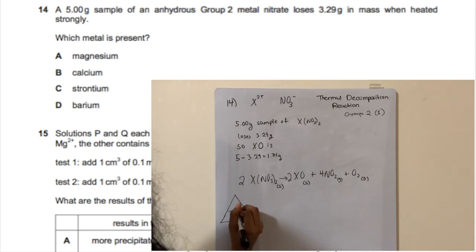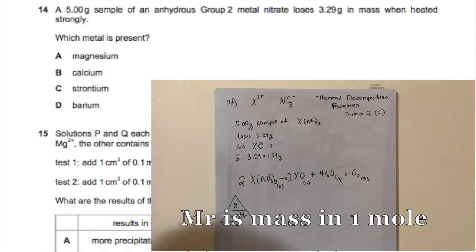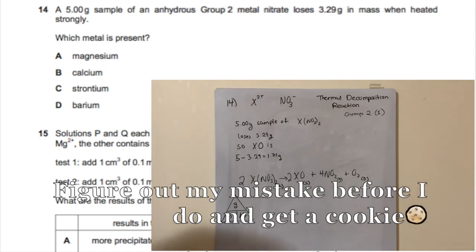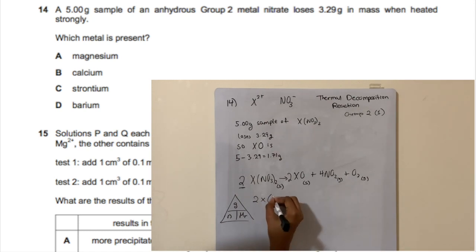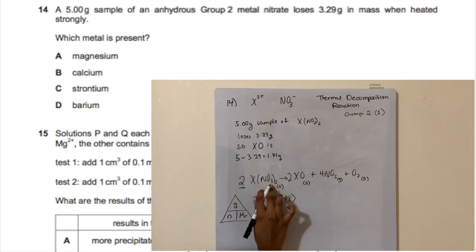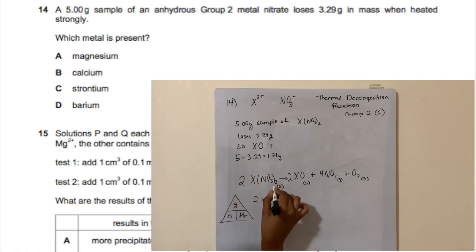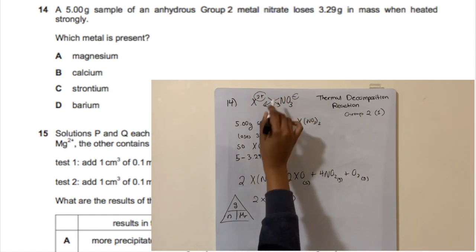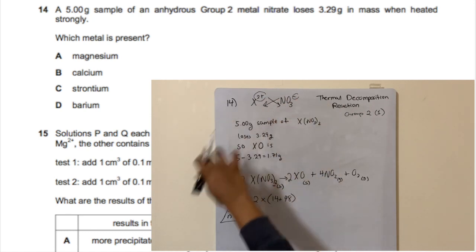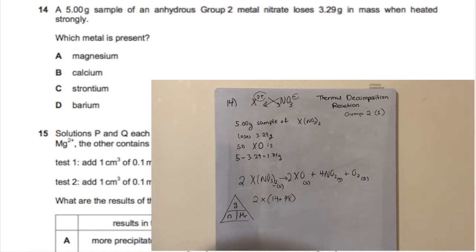Using moles = mass ÷ molar mass, the molar mass of the nitrate ion is 2×(14 + 16×3) = 124 g mol⁻¹ — the coefficient 2 comes from crossing the charges: metal is 2+ and nitrate is 1−. So the molar mass of the whole metal nitrate is (x + 124) g mol⁻¹, where x is the mass of the metal.